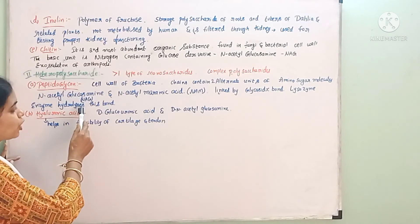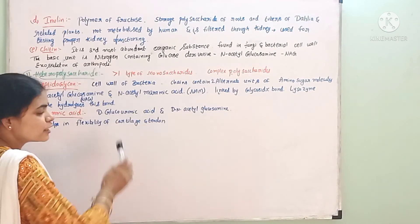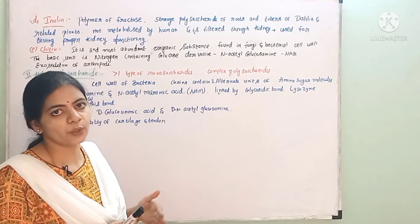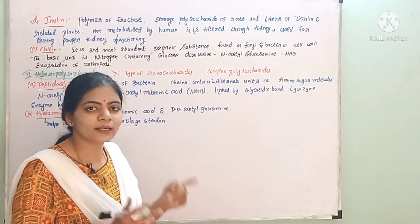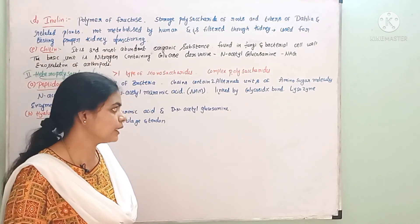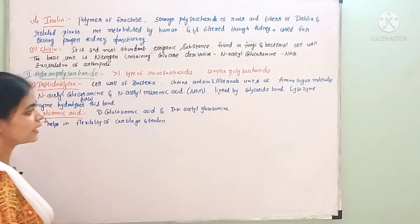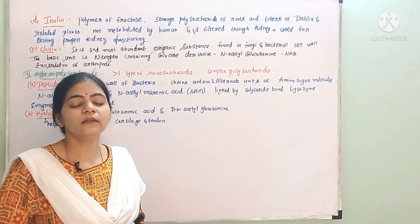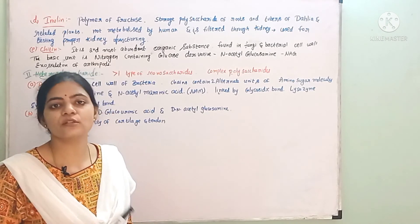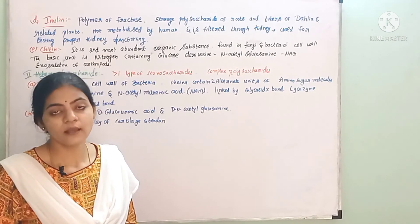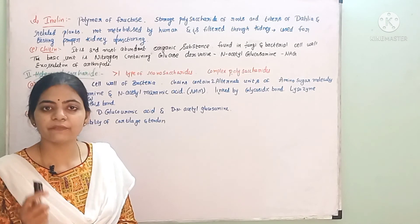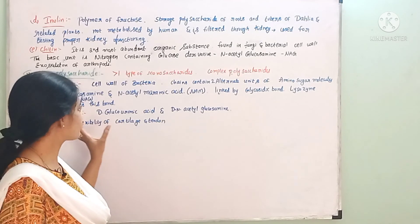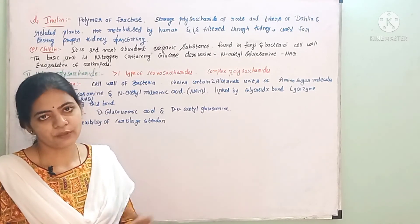The two alternating chains of NAG and NAM are connected by glycosidic bonds. The enzyme lysozyme can easily hydrolyze these bonds. We have lysozyme in our eyes and tears, which acts as a defense mechanism against bacterial infections.